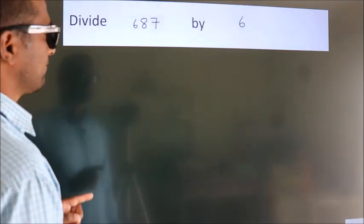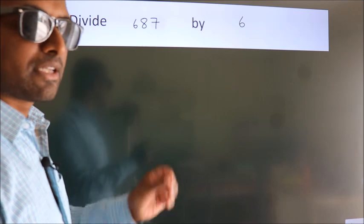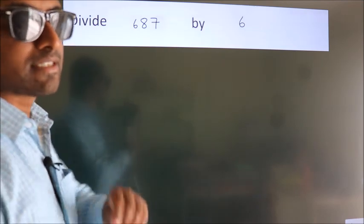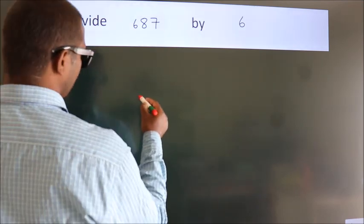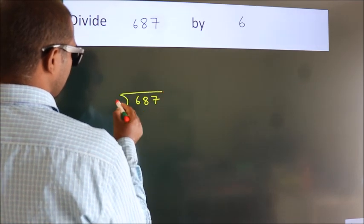Divide 687 by 6. To do this division, we should frame it in this way. 687 here, 6 here.